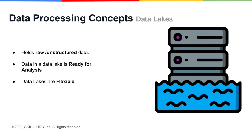Now let's take a look at data lakes. You can store raw and unstructured data in a data lake. Where a data warehouse stores the vegetables that are good and clean to be consumed, a data lake stores all the vegetables — even the ones that are no good for consumption. The data in a data lake is ready for analysis at all times and is the most up to date it can be. However, you may need more technical analysis tools. Data lakes are flexible simply due to their non-structured nature, and any new type of data can be added anytime.